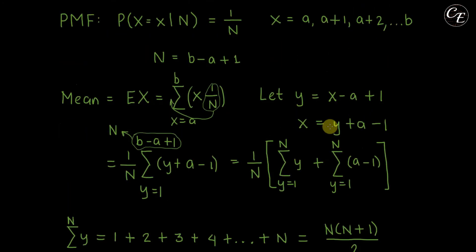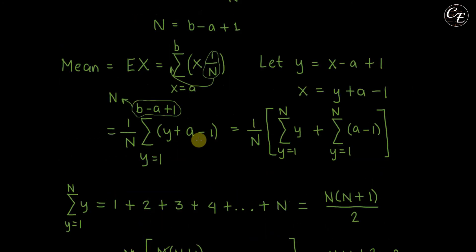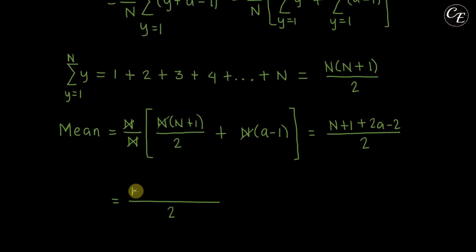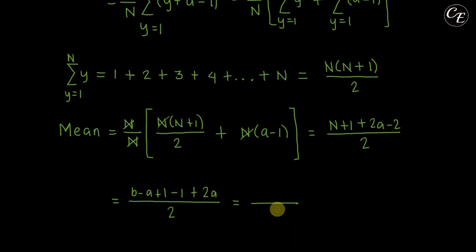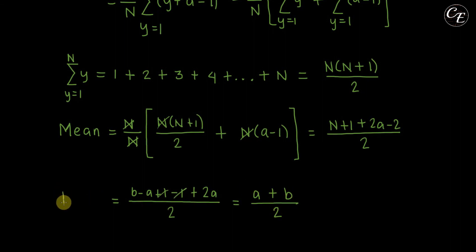Now, substituting n equals b minus a plus 1, we get b minus a plus 1 plus 1 minus 2 plus 2a, all over 2. Simplifying: 2a minus a is a, plus b, and plus 1 minus 1 is 0, so those cancel. The final result is (a plus b) over 2. We have now derived the mean for the discrete uniform distribution.